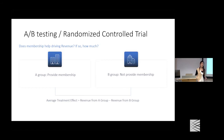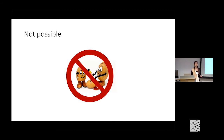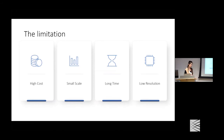To make real causal decisions, the gold standard is a randomized controlled trial (AB testing). One group gets treatment, another doesn't, and we measure the difference to determine causal effects. However, this is often not possible — especially in healthcare, where randomly assigning patients to treatments is unethical — and it has very high costs in money, health, and time.